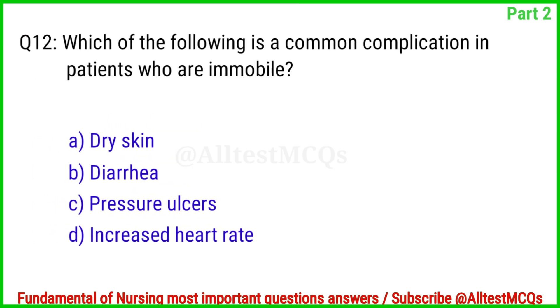Question No. 12. Which of the following is a common complication in patients who are immobile? Correct answer is Option C: Pressure ulcers.